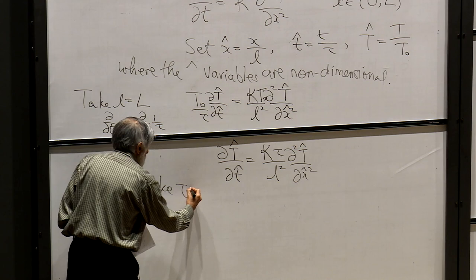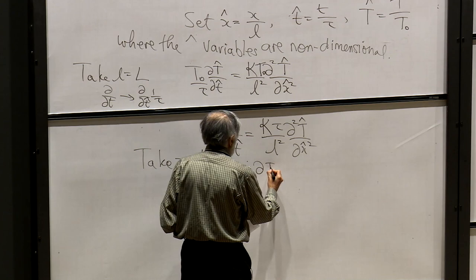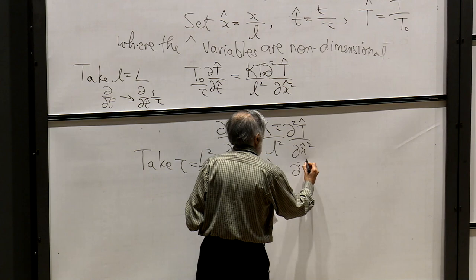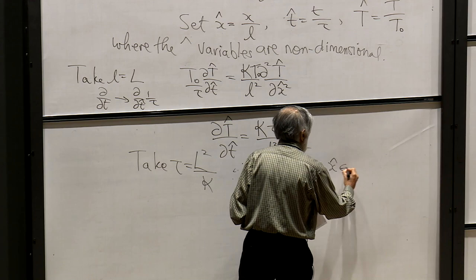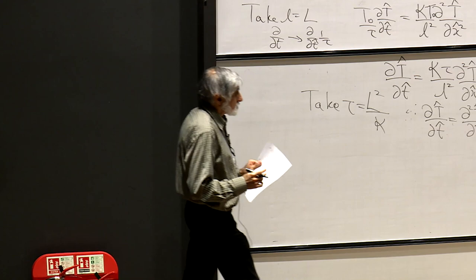Therefore dT-hat/dt-hat equals d²T-hat/dx-hat², and x-hat lies between 0 and 1. So now we've got rid of all the parameters — we've scaled out all the parameters — and made life a lot simpler for ourselves.